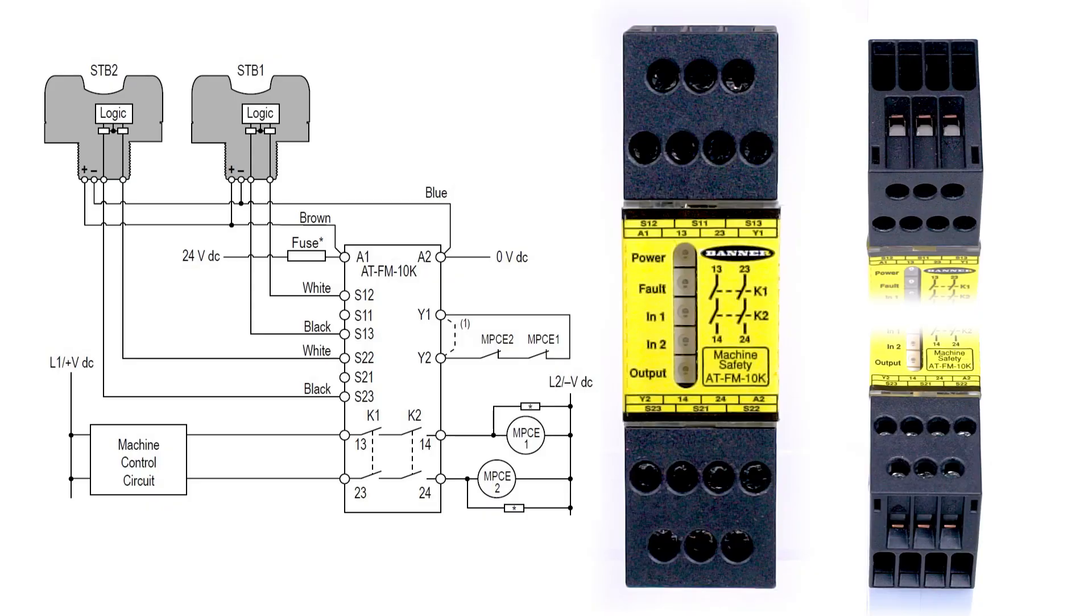The final step for the STB specific wiring is to connect the brown wires from each button to Terminal A1 and the blue wires to Terminal A2.